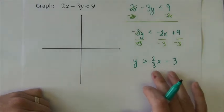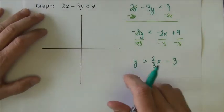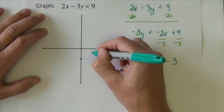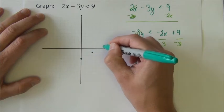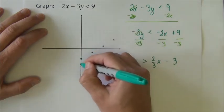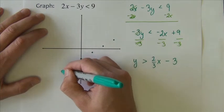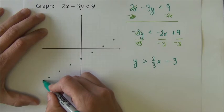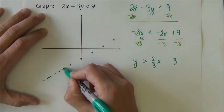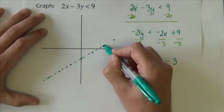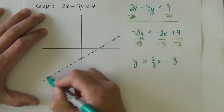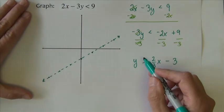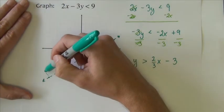With the line solved for y, we're now ready to graph. Start at negative 3 on the y-axis. This slope is 2/3, which means up 2 and to the right 3. We can also come down 2 and to the left 3. This is going to be a dashed line because there is no equal to. We want y's greater than that line, which means we want everything above the line. Everything above the line would shade up here.